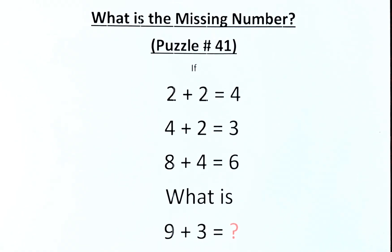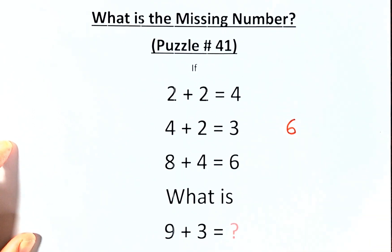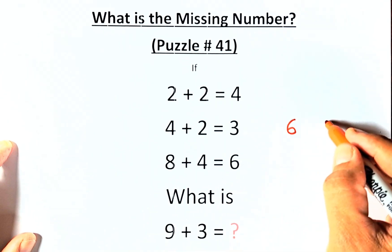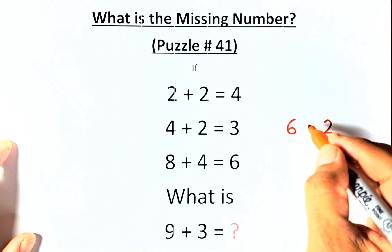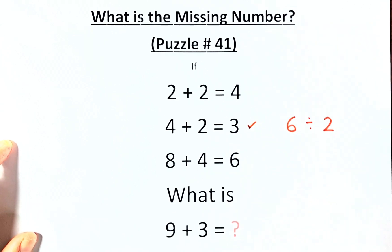To do that, you need to add 4 plus 2 first. So 4 plus 2 is equal to 6. And then the second part, you need to take 4 divided by 2. 4 divided by 2 is 2. And the middle operation, you're going to divide. 6 divided by 2, that will give us 3.